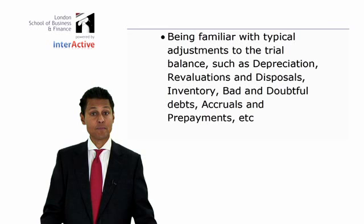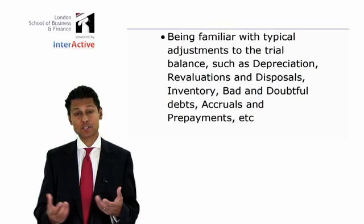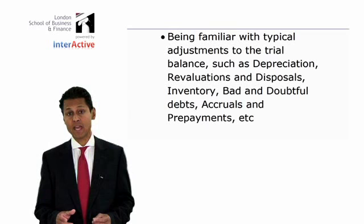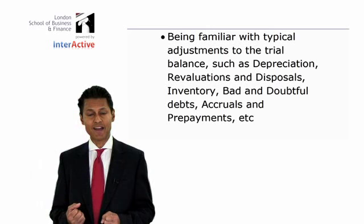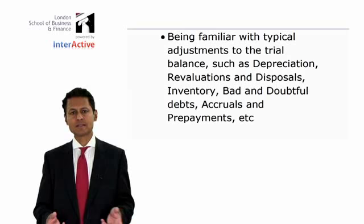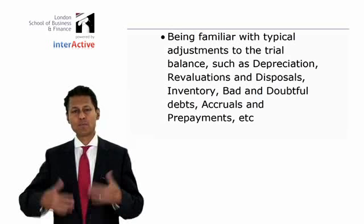What else? Accruals and prepayments. If the business has an electricity bill that it has to pay for this year but hasn't quite got round to paying it by the end of the year — because it relates to the 31st December year-end — it shows up in the books as something payable, a liability to the electricity supplier. You charge your electricity account and credit a liability to pay in January.